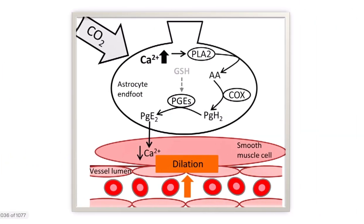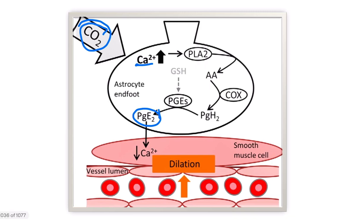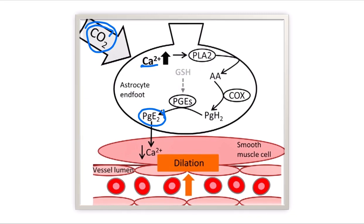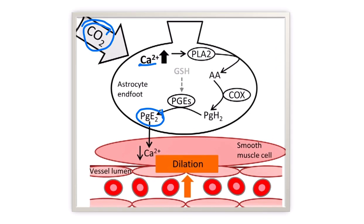Here is how it works: carbon dioxide acts on calcium levels, and from calcium there is prostaglandin secretion. This prostaglandin acts on smooth muscle, and finally blood vessel dilation occurs. So carbon dioxide causes dilation of the blood vessels in the cerebral vascular system.